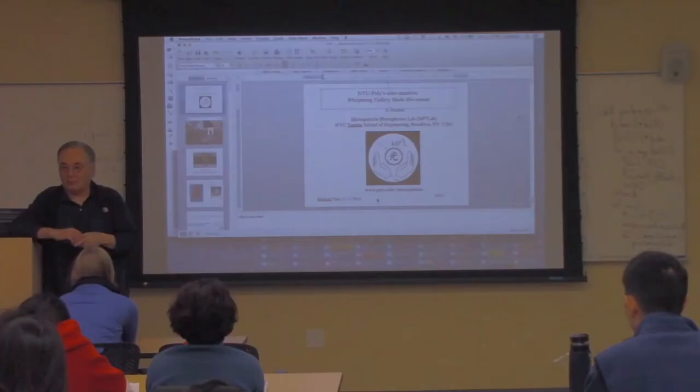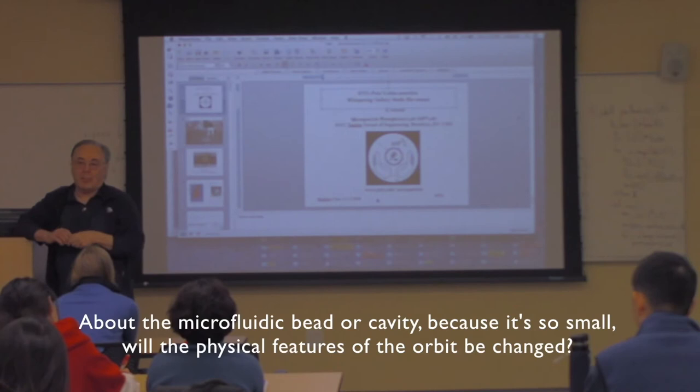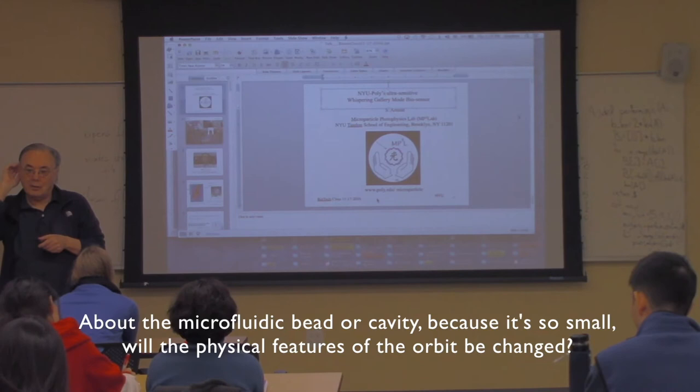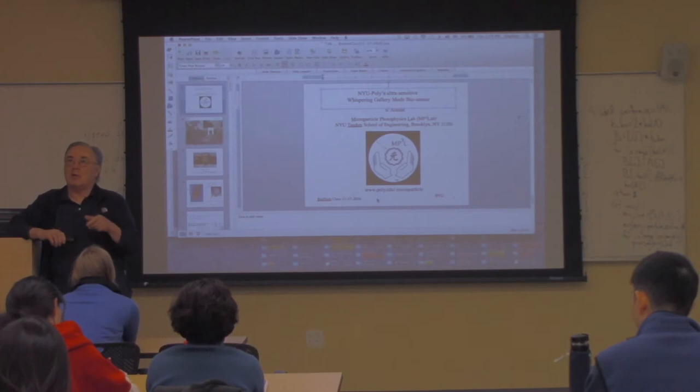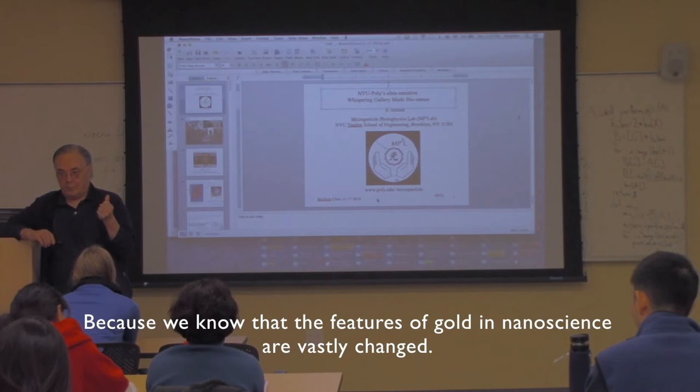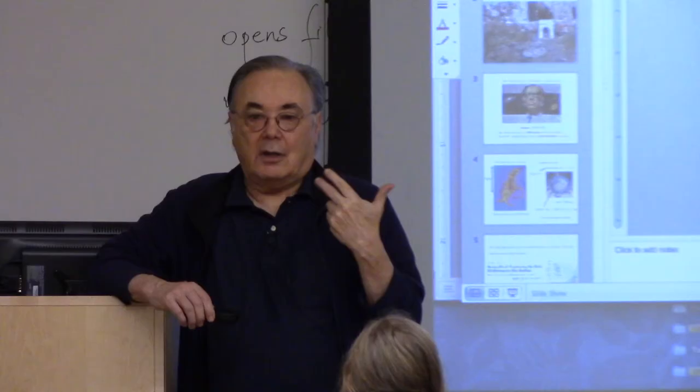Q: About the microfluidic orbit — would the physics change for very small sizes? A: The gold particle will be grabbed by the tractor beam, the light force, and drawn to the surface. If there's a repulsion between the surface — as there was in the case of these negatively charged particles and the negatively charged surface — then it can remain out there and orbit.